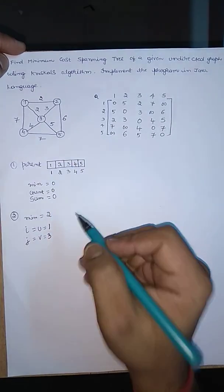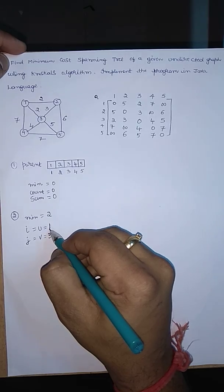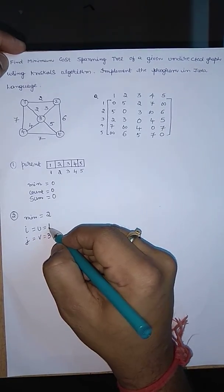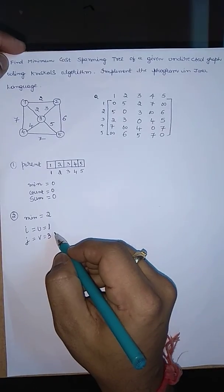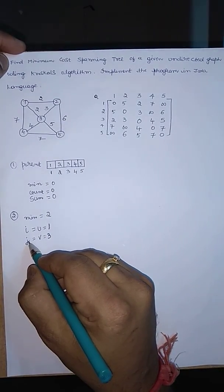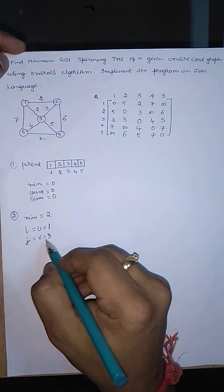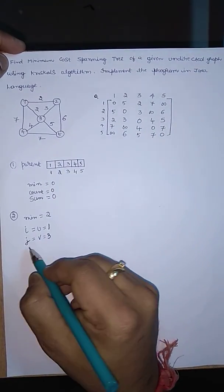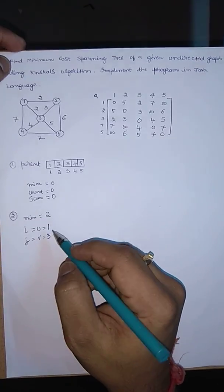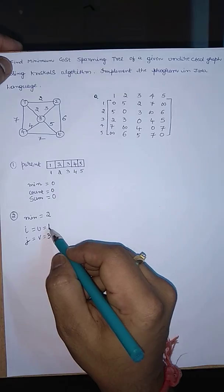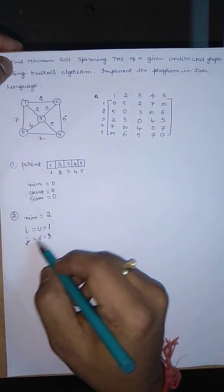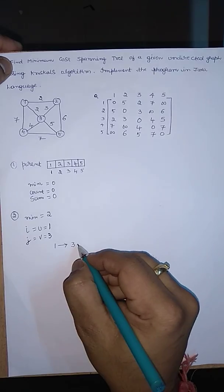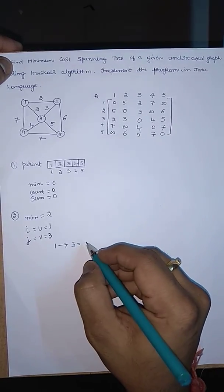First condition: check the parent array. If parent of i equals the index value, no update is required. Parent of 1 is 1 — both are same, so no update needed. Similarly, parent of j: parent of 3 is 3 — both are same, so no update needed. Second condition: if i and j are both the same, do not consider this edge. The value of i is 1 and j is 3 — both are different, so we need to consider edge 1 to 3 with cost 2.